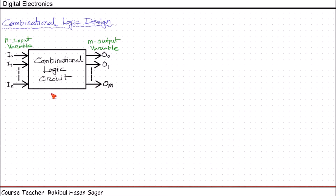This is the basic block diagram of a combinational circuit. The n input binary variables come from an external source, the m output variables go to an external destination, and inside, this combinational circuit is designed as per our output requirements for any set of inputs.